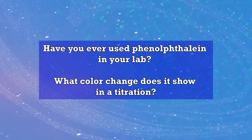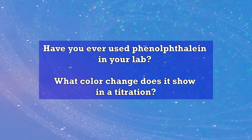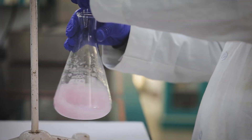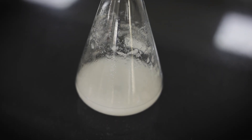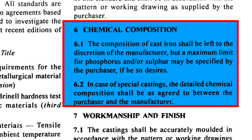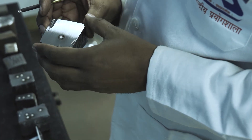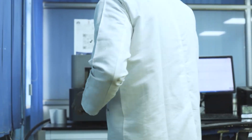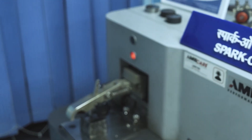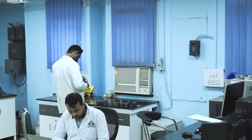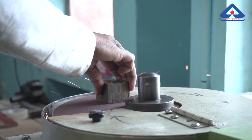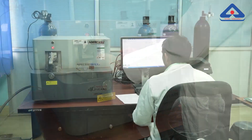We have seen that many reagents and chemicals are used in this test. Have you ever heard phenophthalein being used in your school lab? What color change does it show in a titration? Phenophthalein shows a pink color in basic solutions, and the color disappears when the solution becomes acidic. Sulfur can be estimated with a CS analyzer, which determines sulfur content by combustion in an induction furnace and measuring the resulting gases through infrared absorption. For special castings, the chemical composition can also be determined using spark optical emission spectroscopy, which analyzes samples by creating a spark on the surface and measuring the emitted light, providing precise and rapid results ensuring the castings meet required specifications.